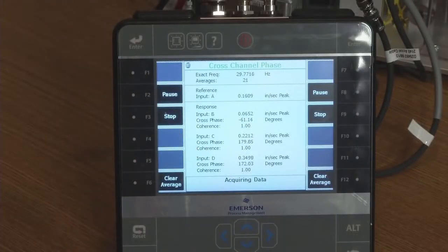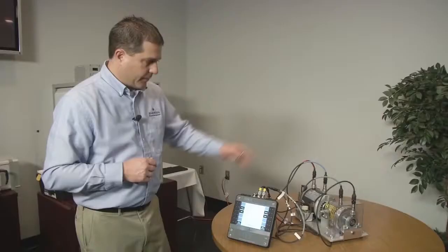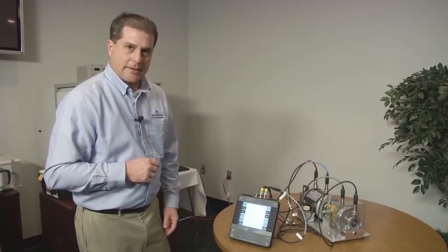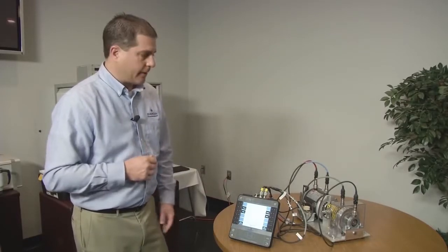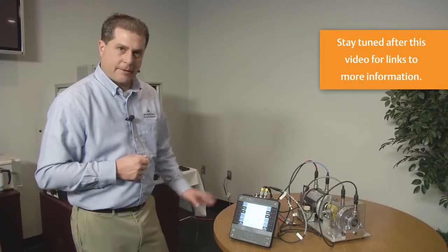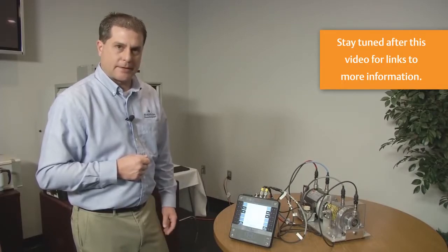Also, you can see that channel D is also very close to 180, verifying that both C and D are in phase, but definitely out of phase, approximately 180 across a coupling, indicating a misalignment condition. Simple test, but only can be done with a powerful analyzer like the CSI 2140.